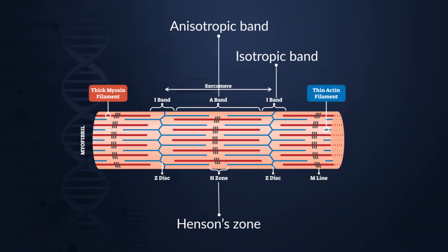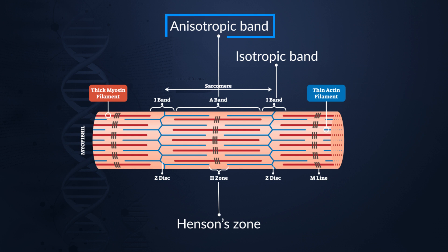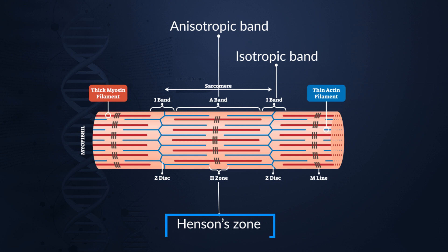In the sarcomere, the position of actin and myosin are understood by bands or zones. When there is presence of only actin filaments in the sarcomere region, we call it the isotropic band or I band. When there is a parallel arrangement of the actin and myosin filaments, we call it the anisotropic band or A band. There is also a specific zone called the H zone or Henson zone, which shows presence of only myosin filaments.